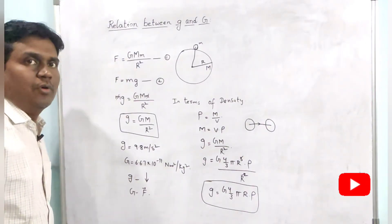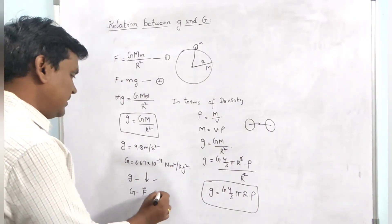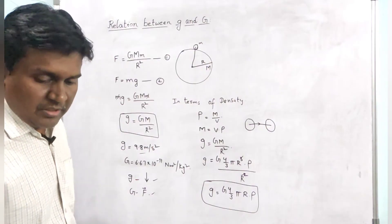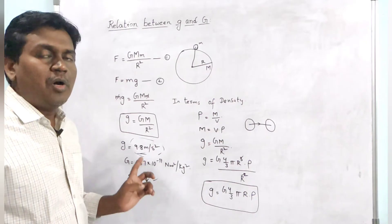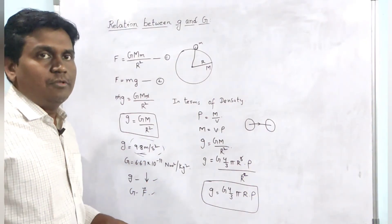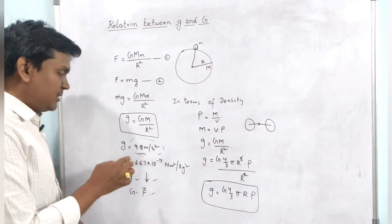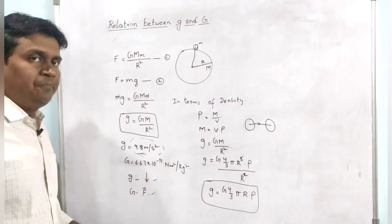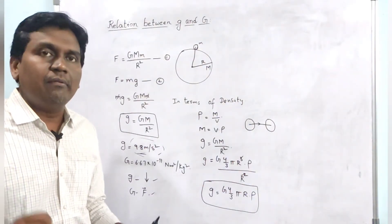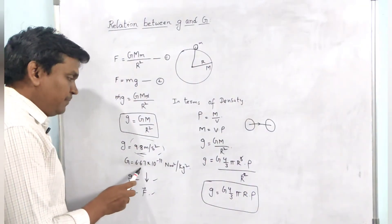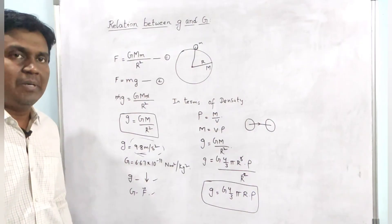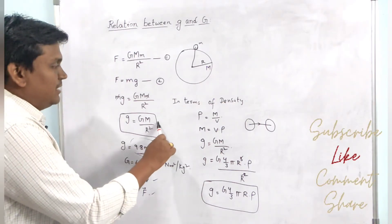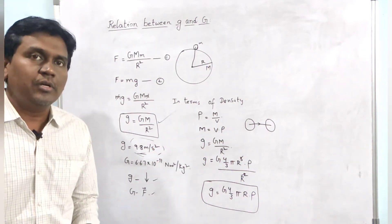The small g value varies from place to place and from location to location. At poles, the small g value will be maximum, and at the equator, the small g value will be minimum. But capital G is constant throughout the universe — wherever you go, capital G does not change from place to place. These are some differences between small g and capital G, and the relation is g equal to GM by R square.